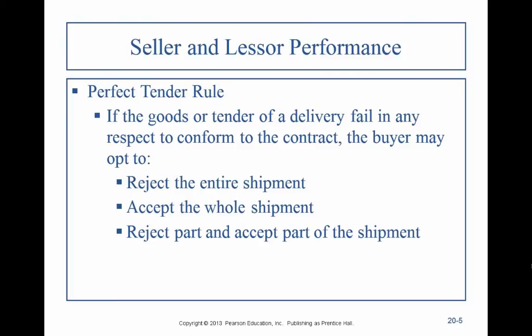The perfect tender rule gives the buyer total control. Things happen — people in warehouses could mix up an order. That is not the way to run a good business. If you're a seller, you will negotiate that the perfect tender rule will not apply. But if you don't negotiate it, it applies — it's a default rule. A lot of buyers don't even know it applies; they don't realize they have the ability to reject the whole shipment. The perfect tender rule only applies before you actually accept goods.